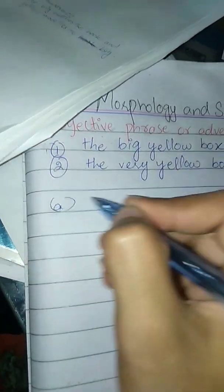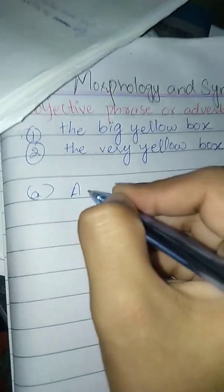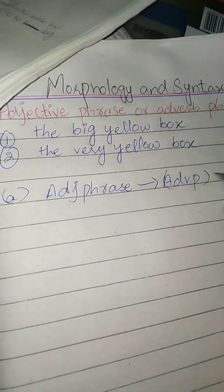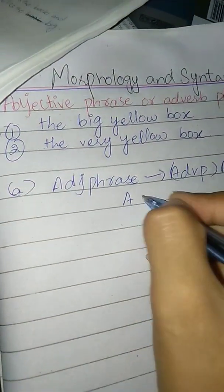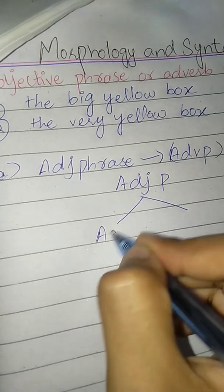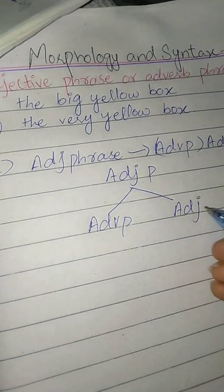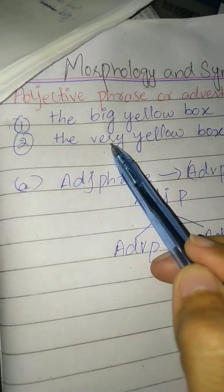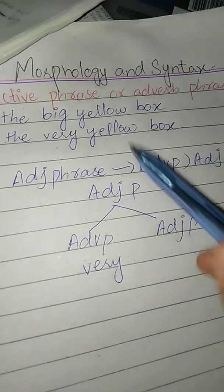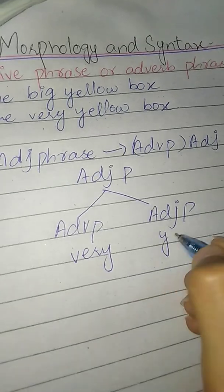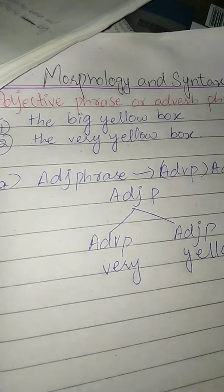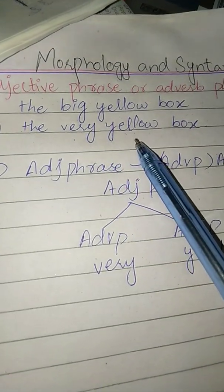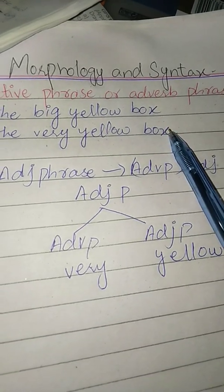The first rule is: the adjective phrase consists of adverb phrase and adjective. As we write, adjective phrase — one goes like adverb phrase, and the adjective is 'very'. Adjective phrase and adverb phrase are modifiers.